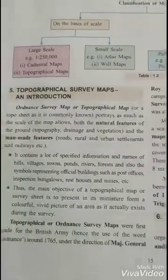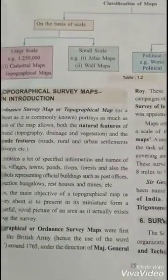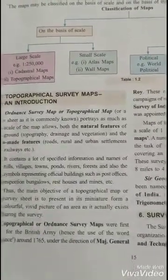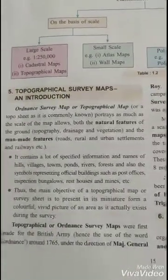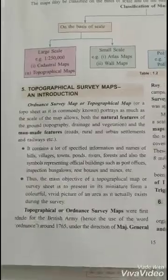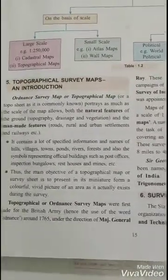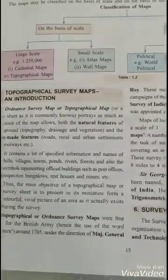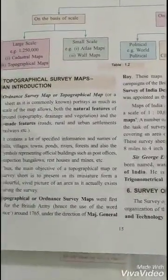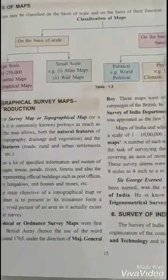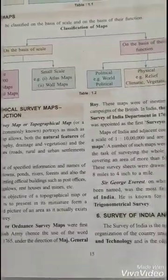Large scale maps provide us large detail of the area, like man-made features, natural features, roads, wells, agriculture, occupation of the people, and type of vegetation found there. Small scale maps provide us smaller information, like Atlas maps which you were doing in the junior classes.